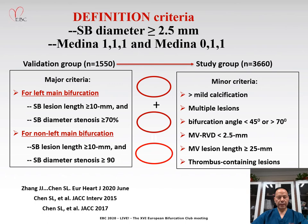Previously, we established definition criteria for patients with Medina 111 and Medina 011 coronary bifurcation lesions with side branch diameter of at least 2.5 mm. When we established the criteria from the validation group and tested it in another study group, we arrived at one major criterion plus any two minor criteria, which could define a complex coronary bifurcation lesion.